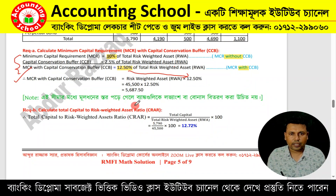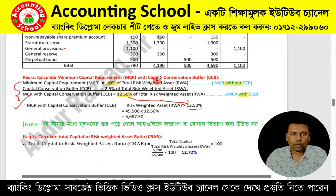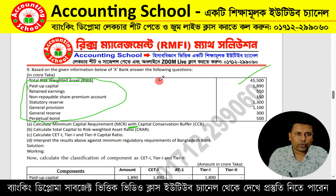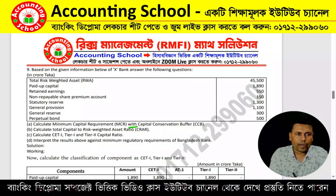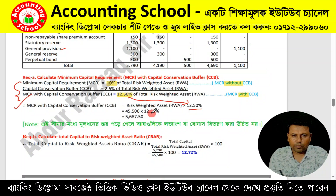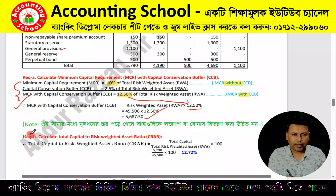For the calculation, we use the total risk-weighted assets (RWA). The tax — that is, the risk-weighted asset — is the total risk-weighted asset figure provided in the problem.